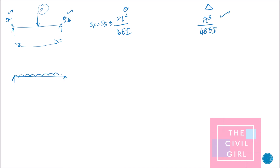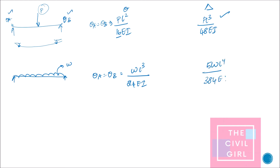For a simply supported beam with a UDL of intensity W, you will again have both theta A and theta B of equal magnitude. The slope is WL³ divided by 24EI, and the deflection is 5WL⁴ divided by 384EI.